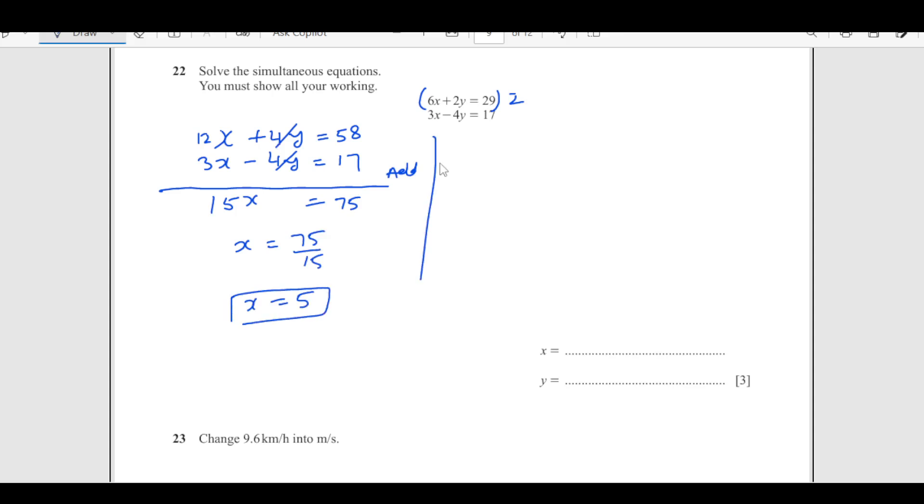Now we can substitute in any of these equations. So 6x plus 2y equals 29. x is now 5. You can take any of these two equations. So 2y is 29 minus 30 which is negative 1 and y will be negative 0.5. So we are going to write down that in the space provided here, x equals 5 and y equals negative 0.5.